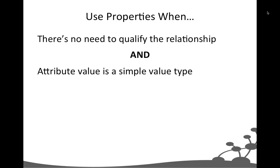Alternatively, model your entity attribute as a property on the parent node when both of these obtain: there's no need to qualify the relationship, and the attribute value is a simple value type — like eye color or age — a single value with no multiple fields and nothing interesting about how it's attached to the entity. In that case, just model it as a property on the node.